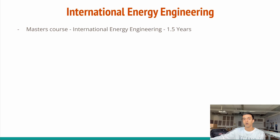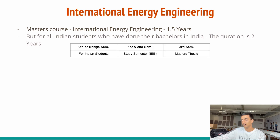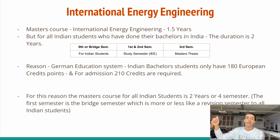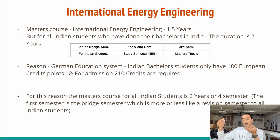My master's course IEE is a 1.5-year course, but for all Indian students who have done their bachelor's in India, the duration is two years. The reason is the German education system considers Indian bachelor's students to have only 180 European credits during their bachelor's, while 210 European credits are required for admission. To cover the 30 missing credits, one extra semester called the bridge semester is added at the start of the master's course. So for Indian students, the master's course is two years — four semesters — with the first semester being the bridge semester.